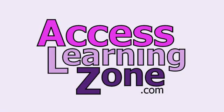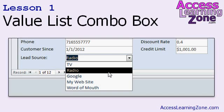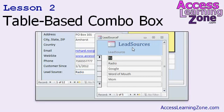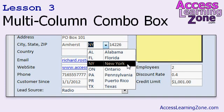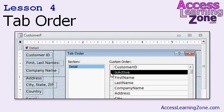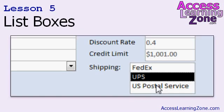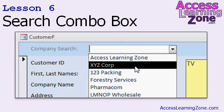Now let's take a closer look at exactly what's covered in today's class. In lesson one, we're going to learn how to create a combo box based on a list of values. In lesson two, we're going to learn a better way to build combo boxes by getting the list of values from a table and creating our own form to edit that list. In lesson three, we're going to learn how to build a multi-column combo box so we can see a list of our state abbreviations and the full state names. In lesson four, we're going to learn how to control a form's tab order. In lesson five, we're going to learn how to set up list boxes. In lesson six, you're going to learn how to search for a record using a combo box.